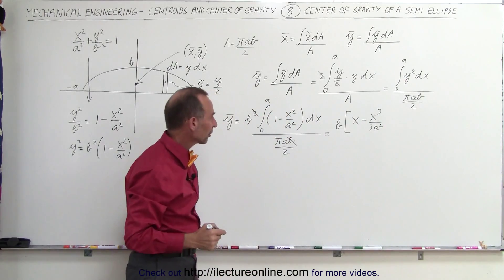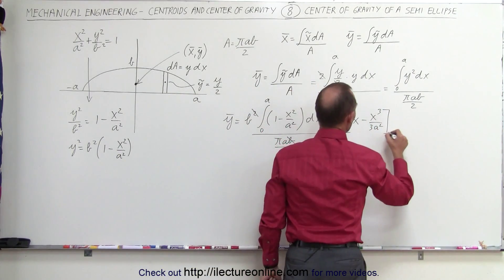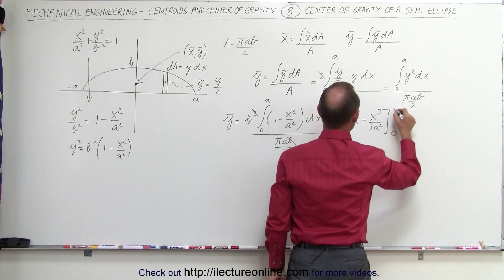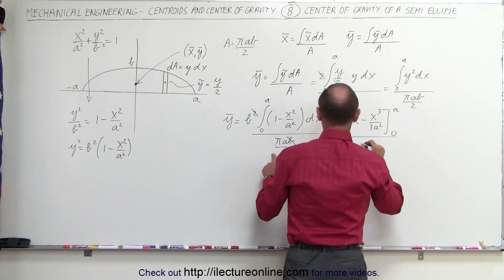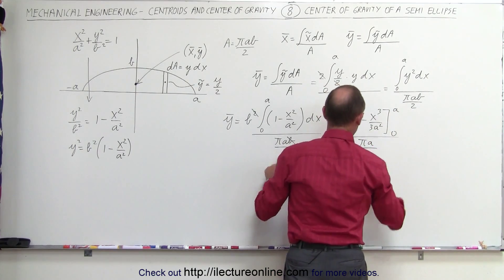So we add one to the exponent, divide by the new exponent. We evaluate from 0 to A, and we divide by what we have left, which is πA over 2.